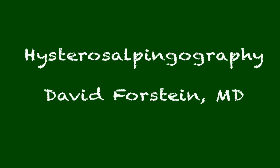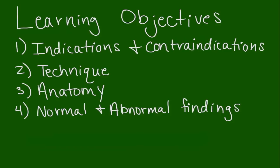Hysterosalpingogram is one of those common compound words that we use in medicine. Hystero comes from the Greek word for uterus, and salpingo comes from the Greek word for tube, so we're looking at the uterus and tube. Our learning objectives are to define the indications and contraindications for HSG, to understand the basic technique of the procedure, to look at the basic anatomy as seen on x-ray or fluoroscopy, and to identify some common normal and abnormal findings.